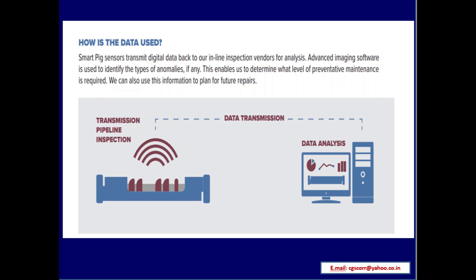How is the data used? Smart pig sensors transmit digital data back to inline inspection vendors for analysis. Advanced imaging software is used to identify the types of anomalies, if any. This enables determination of what level of preventative maintenance is required and allows planning for future repairs. The image at the bottom shows the transmission pipeline inspection, data transmission, and data analysis.